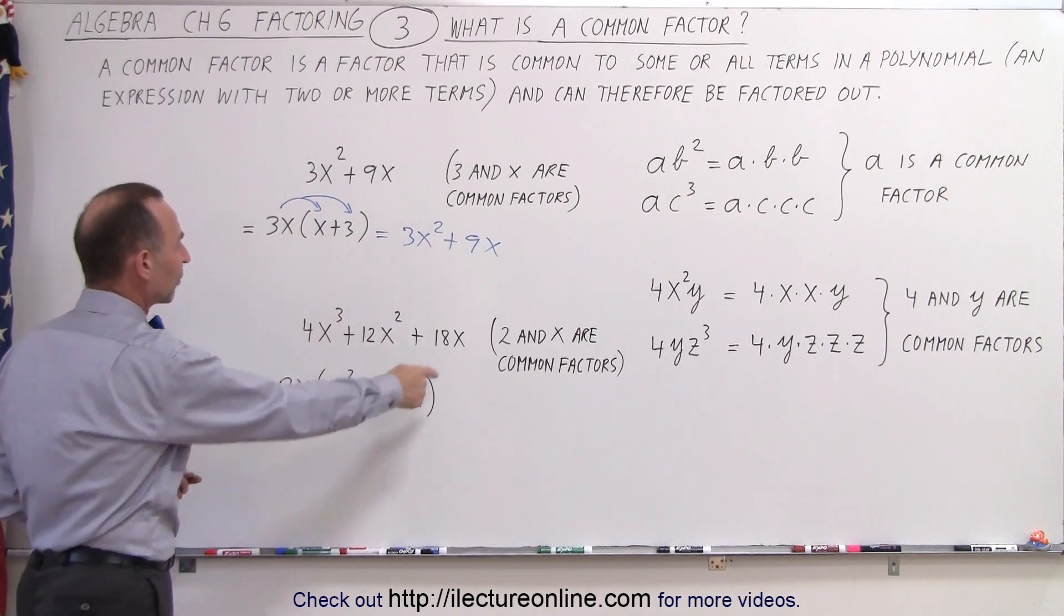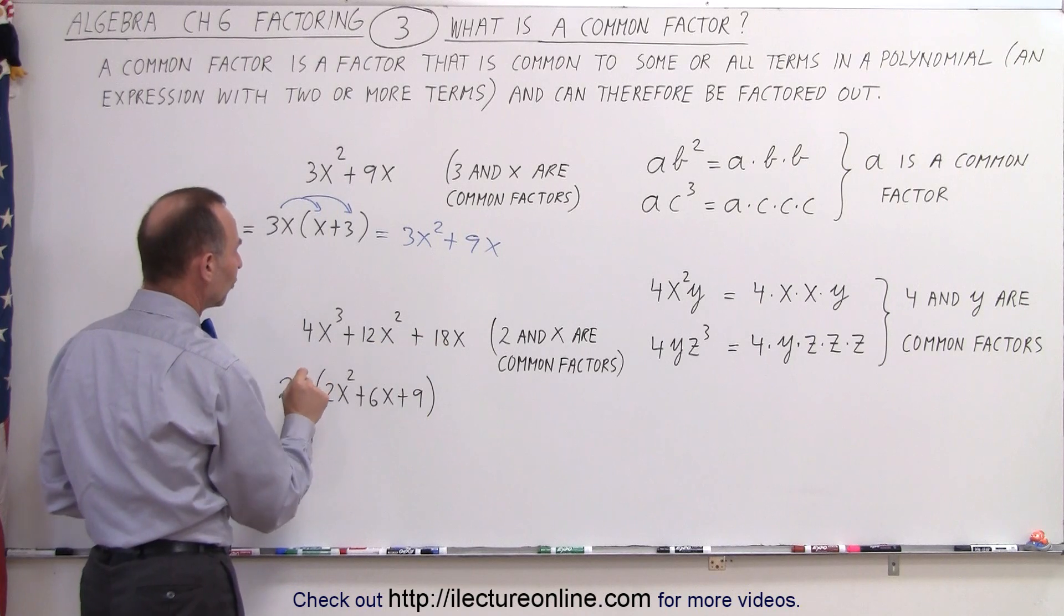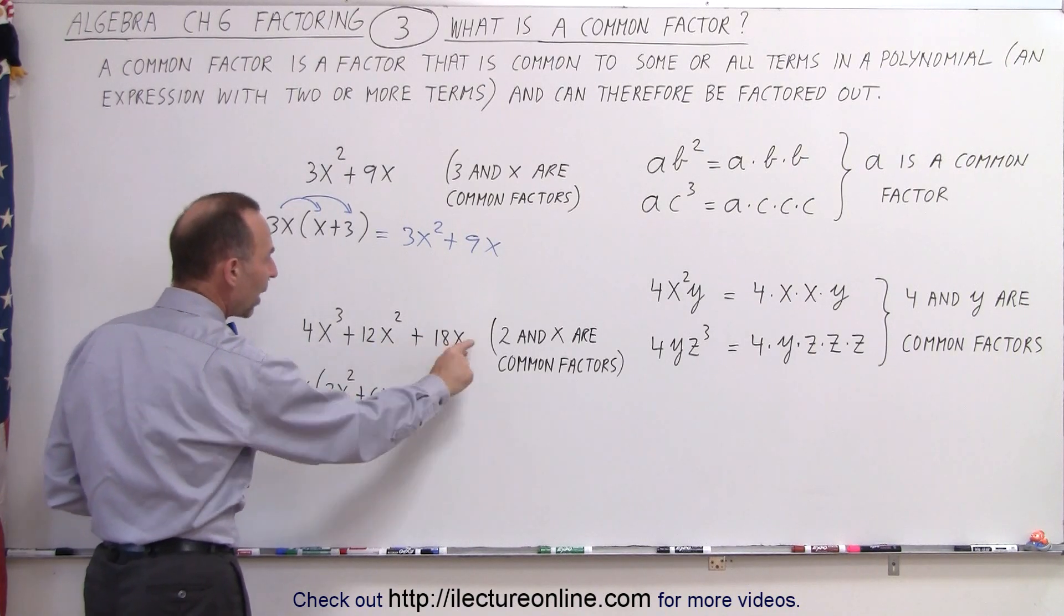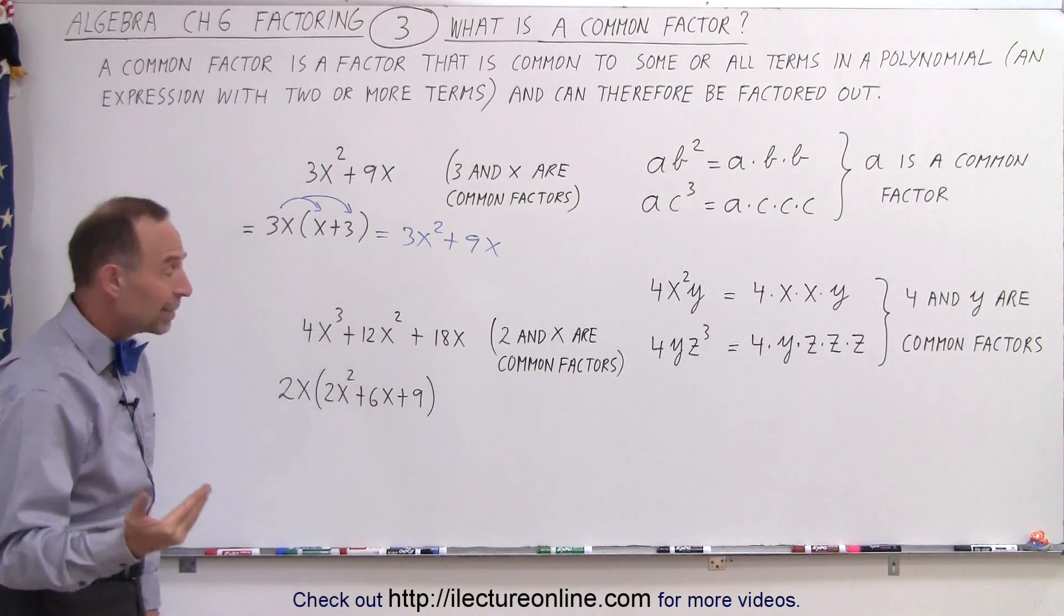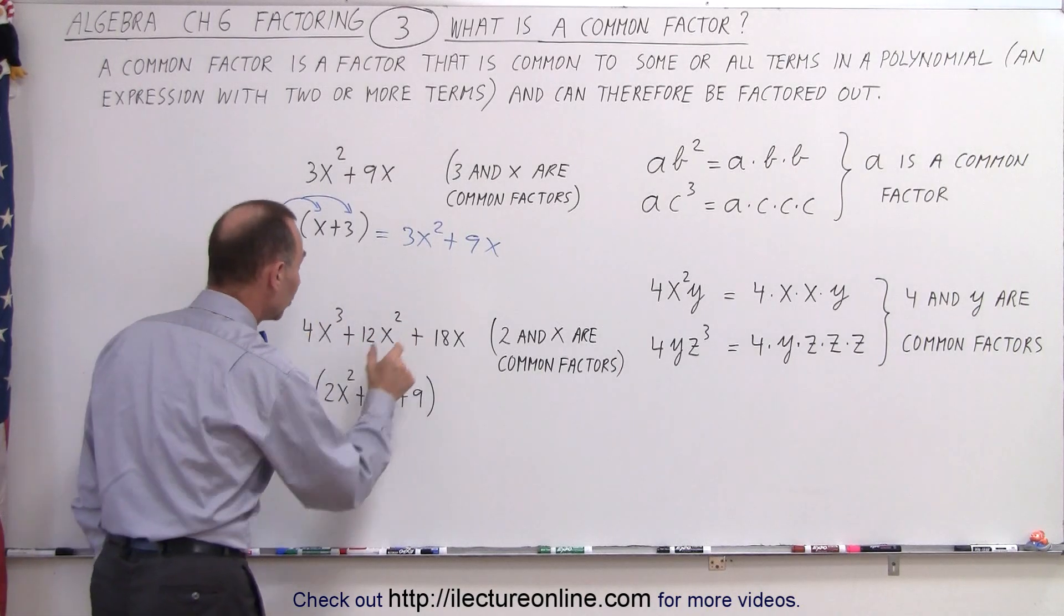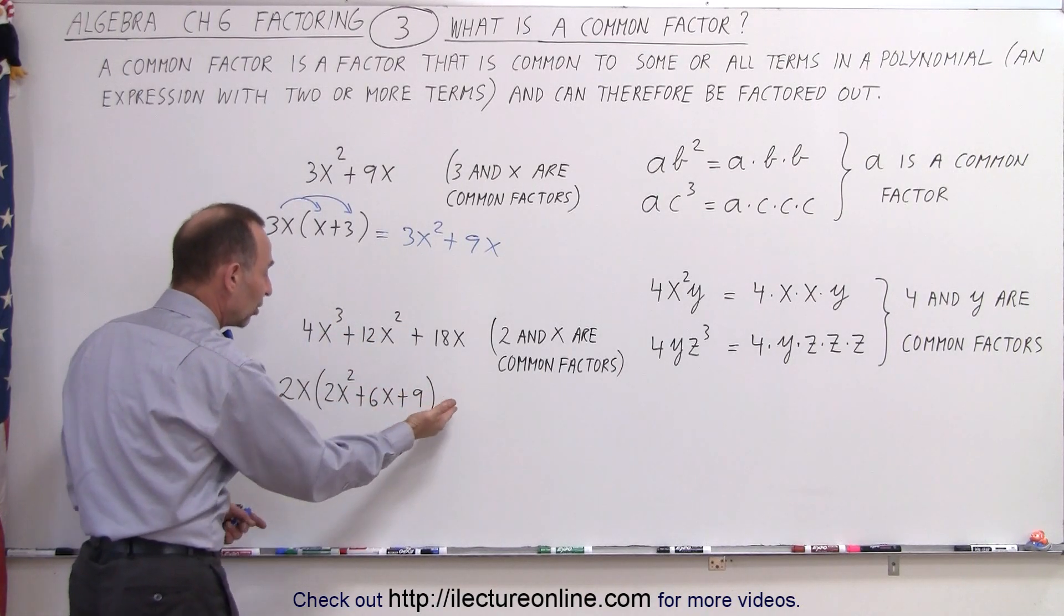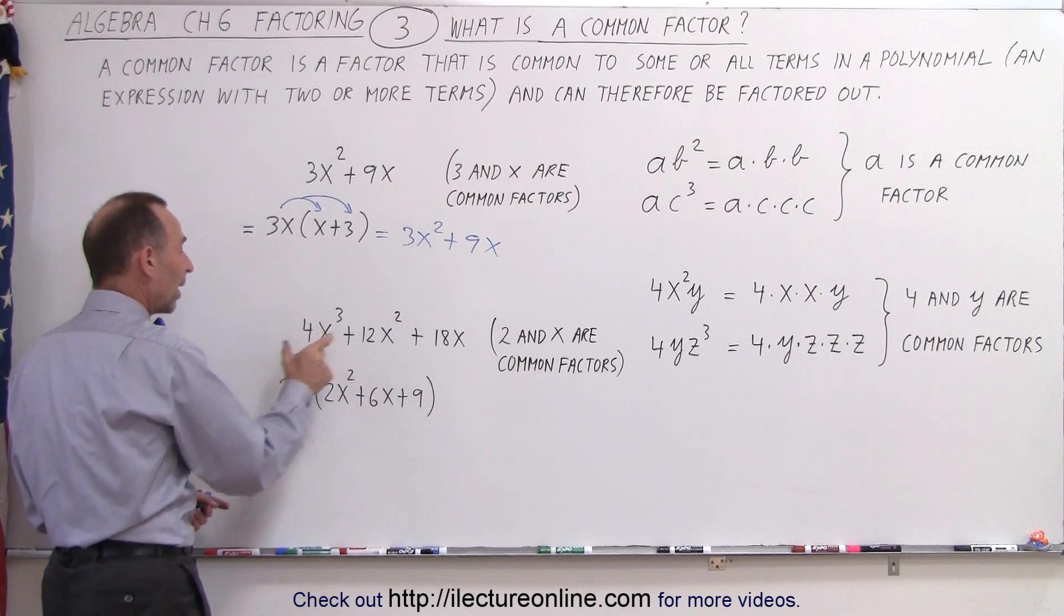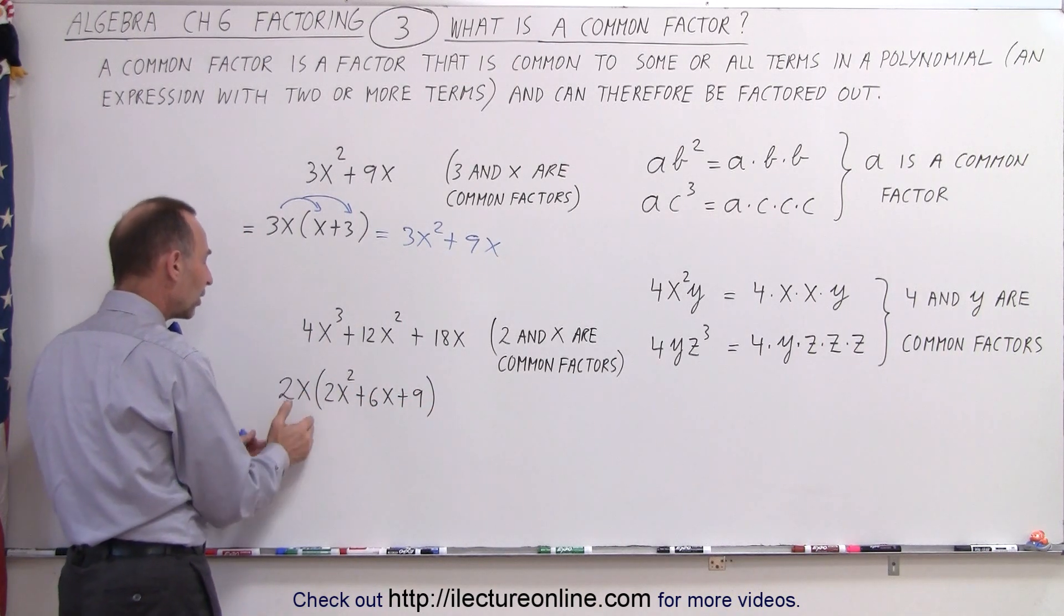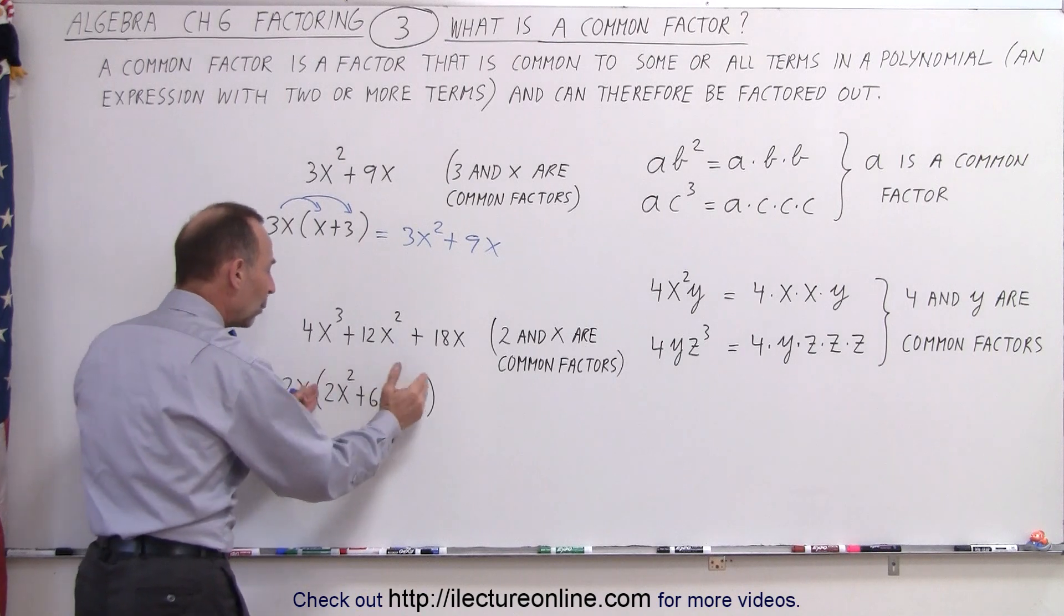Here again, we have a polynomial. In this case, three terms. Notice that 2 and x are common in all the terms. That means I can divide each of the three terms by 2x. We essentially factor out the 2x and write it as a product of the factors 2x and what is remaining.